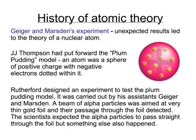Sometimes evidence that challenges or supports a theory comes by accident. Geiger and Marsden's experiment is one such example. Before their experiment, J.J. Thomson had put forward the idea that electrons were fairly randomly scattered through the atom — a bit like a plum pudding, or a currant bun or blueberry muffin — in other words, a sphere of positive charge with negative electrons dotted randomly within it.